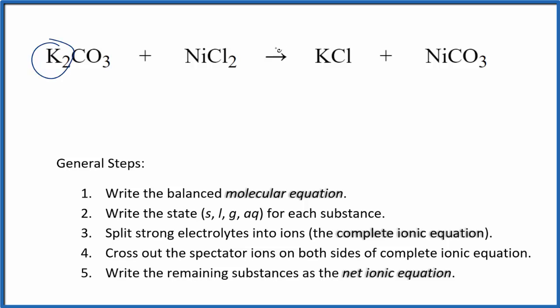I can see two potassium atoms here, just one here. Let's put a 2 in front of the KCl. That balances the potassiums. We have two chlorines here and two chlorines there. That's good. A nickel and a nickel, and then we have a carbonate ion and a carbonate ion. So this is the balanced molecular equation.